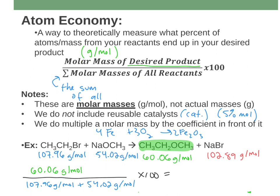If you punch this into your calculator, you should get about 37.08% — that is the atom economy for that reaction. So I took just the molar mass of the product from the periodic table, divided it by all of the reactants, multiplied by 100 to get my percentage. We're saying that 37% of the mass of the reactants ends up in the product.